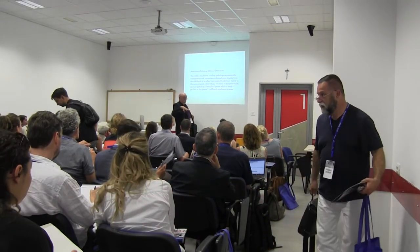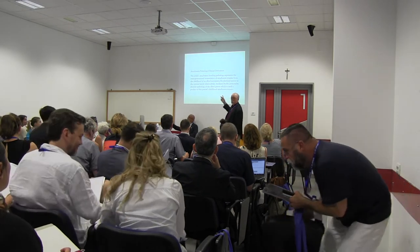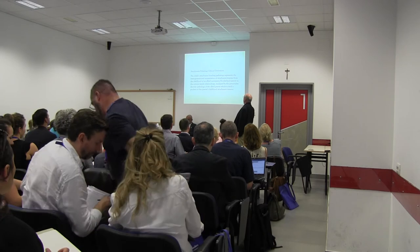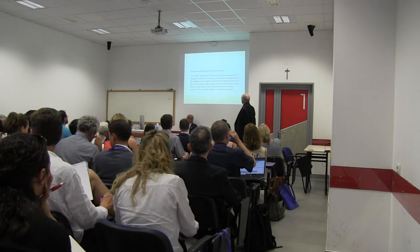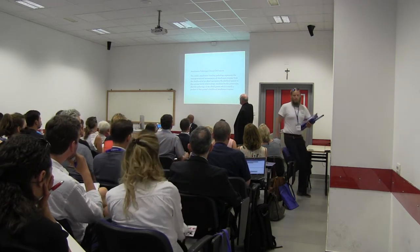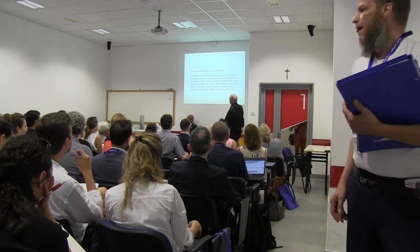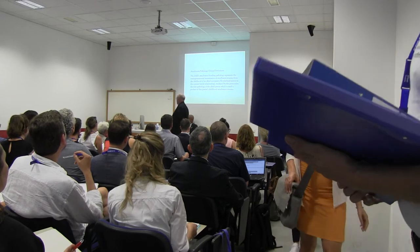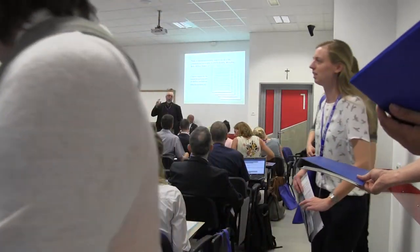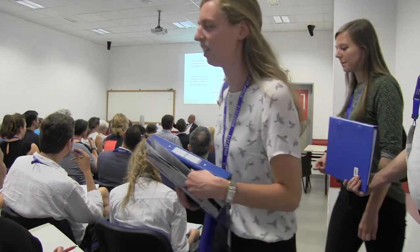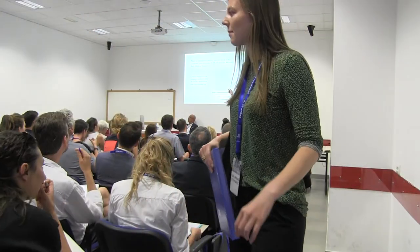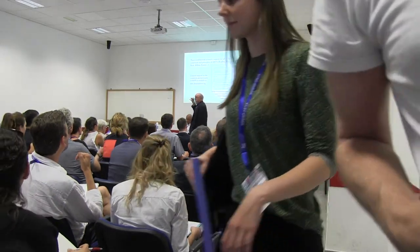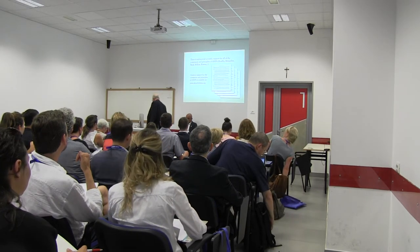When we apply attachment theory and personality pathology, the child's attachment bonding pathology represents the transgenerational transmission of attachment trauma from the childhood of the allied narcissistic/borderline parent to the current family relationships, mediated by the personality pathology of the allied parent, which is itself a product of this parent's childhood attachment trauma. Once we move into the attachment system and trauma pathology, a whole domain of understanding opens up. There is substantial research supporting this. It's not something new — in fact, it's something pretty old. It's all standard stuff.